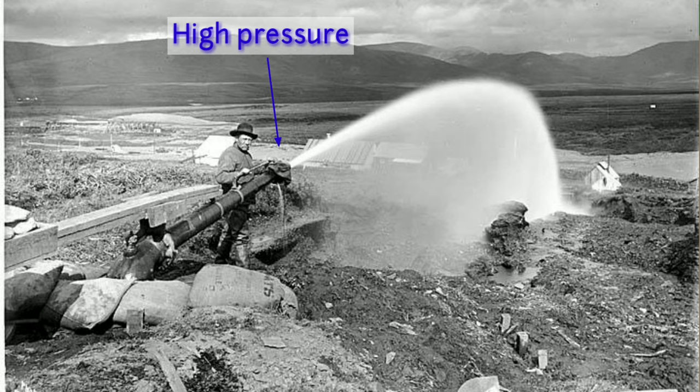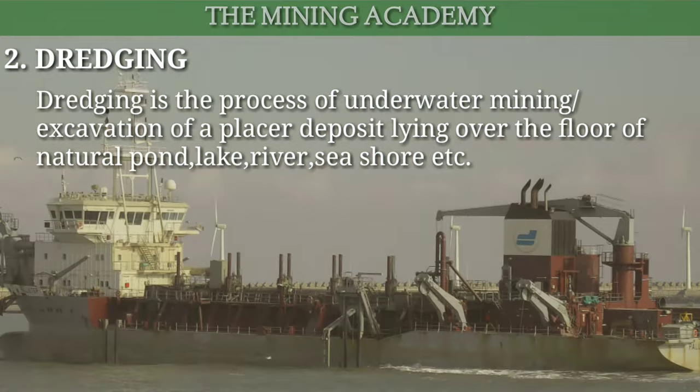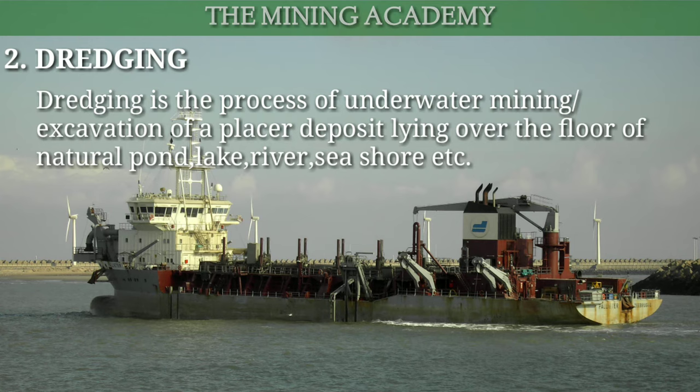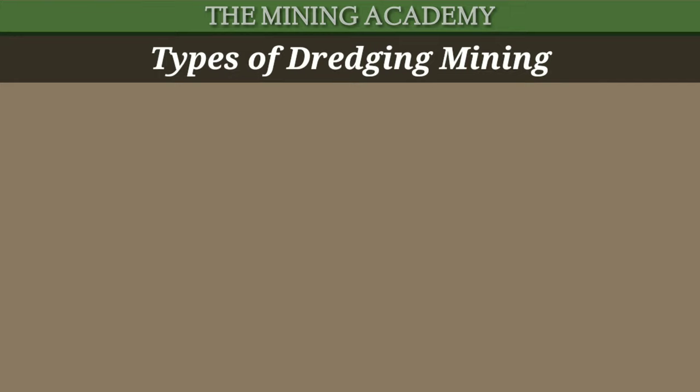Doosri hai dredging. Dredging method ka use water ke andar ke placer deposits ko extract karne ke liye kiya jaata hai. Is method mein ek floating vessel hota hai jise dredge kehte hain. Yah floating dredge pond, lake, river, etc. ke upar float karke placer deposit ko nikaalta hai. Dredging method do categories mein classified hai: pahli shallow water methods, jo ki kam depth ke placer deposit ke liye use karte hain; doosri hai deep sea marine mining methods.